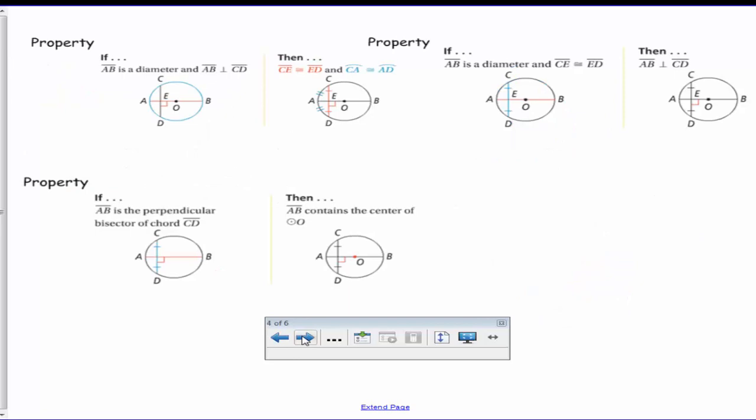Now here are three properties that actually go together, and they have three key words that I'm going to highlight in each property. The first word is diameter. The second word is that symbol, which means perpendicular. So we have perpendicular, diameter, and then the last word that's important is bisector or bisects.